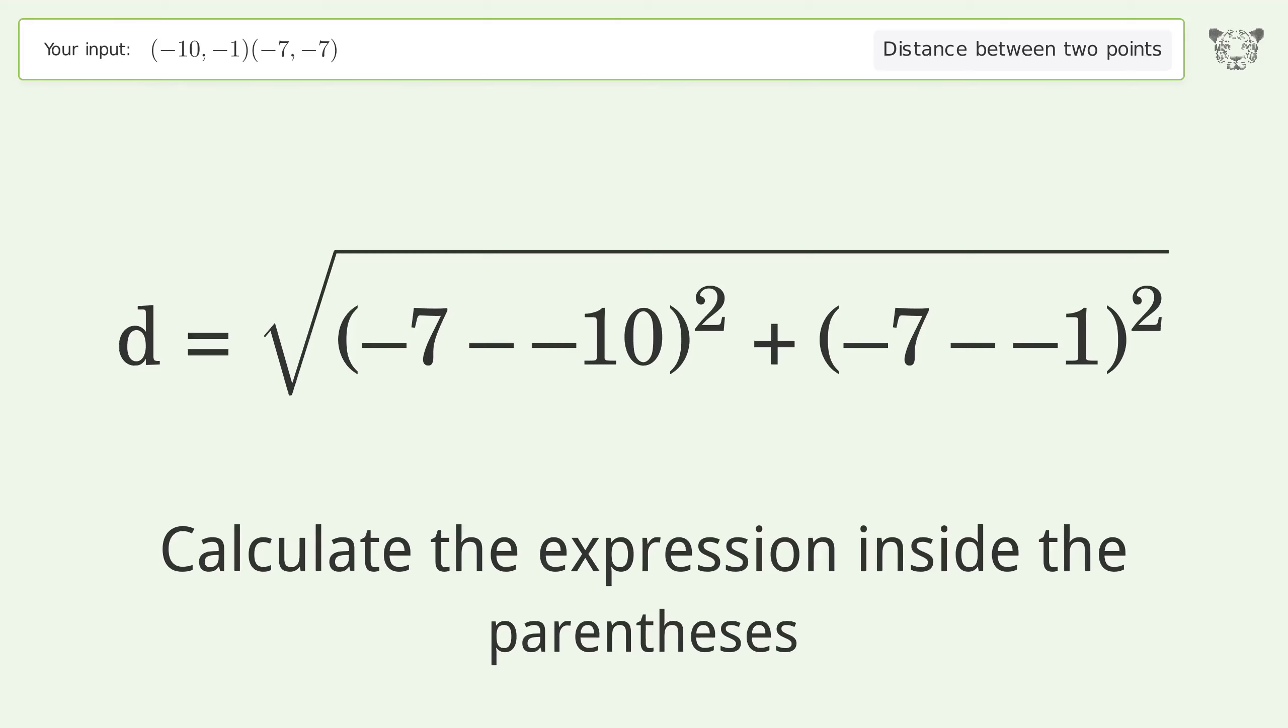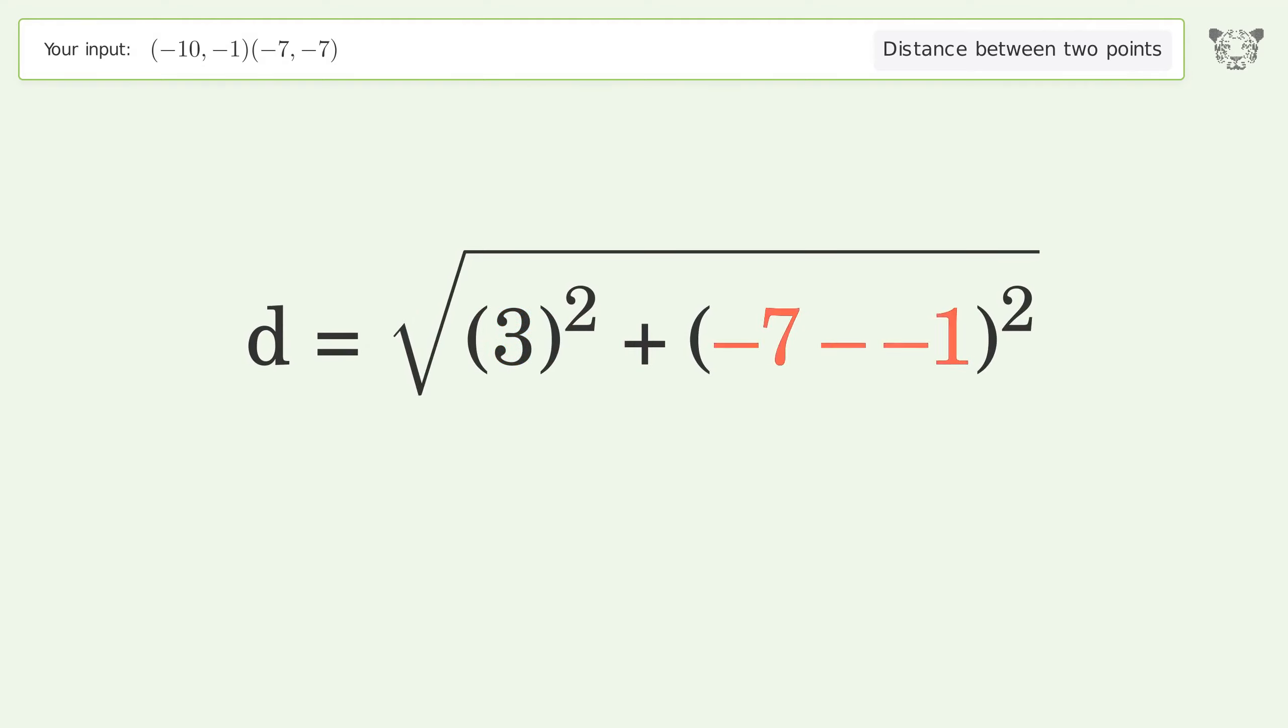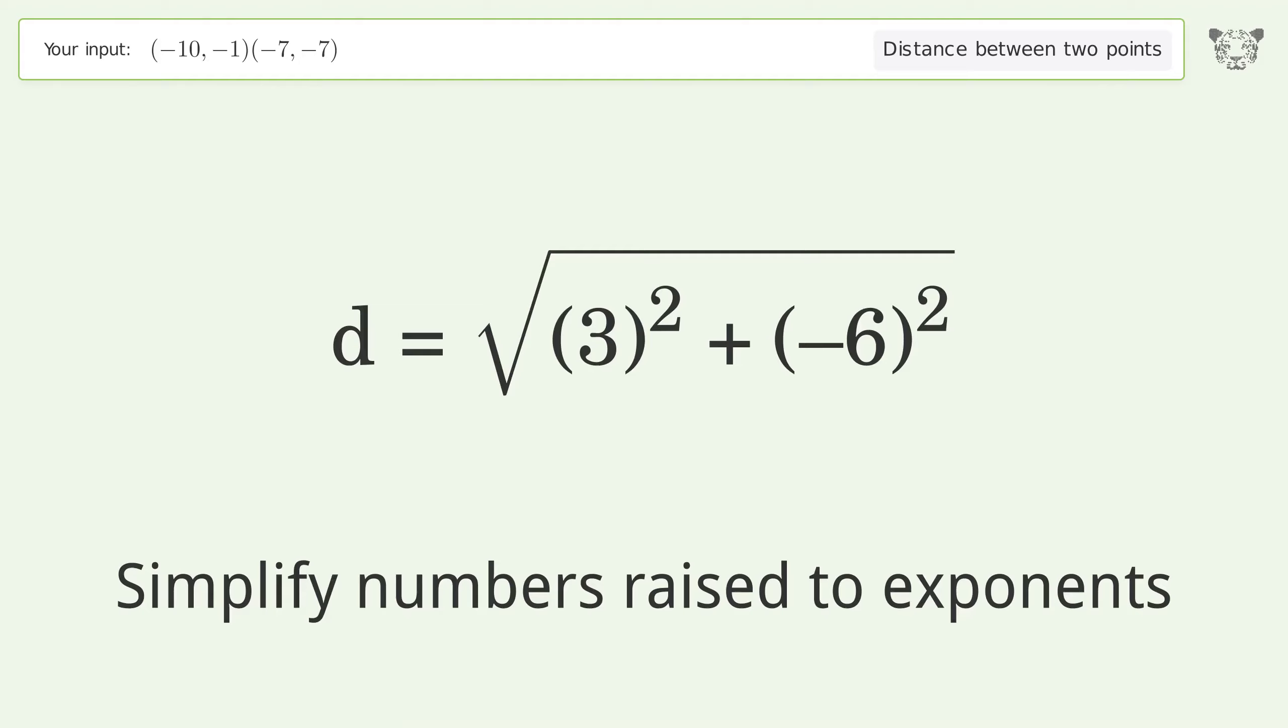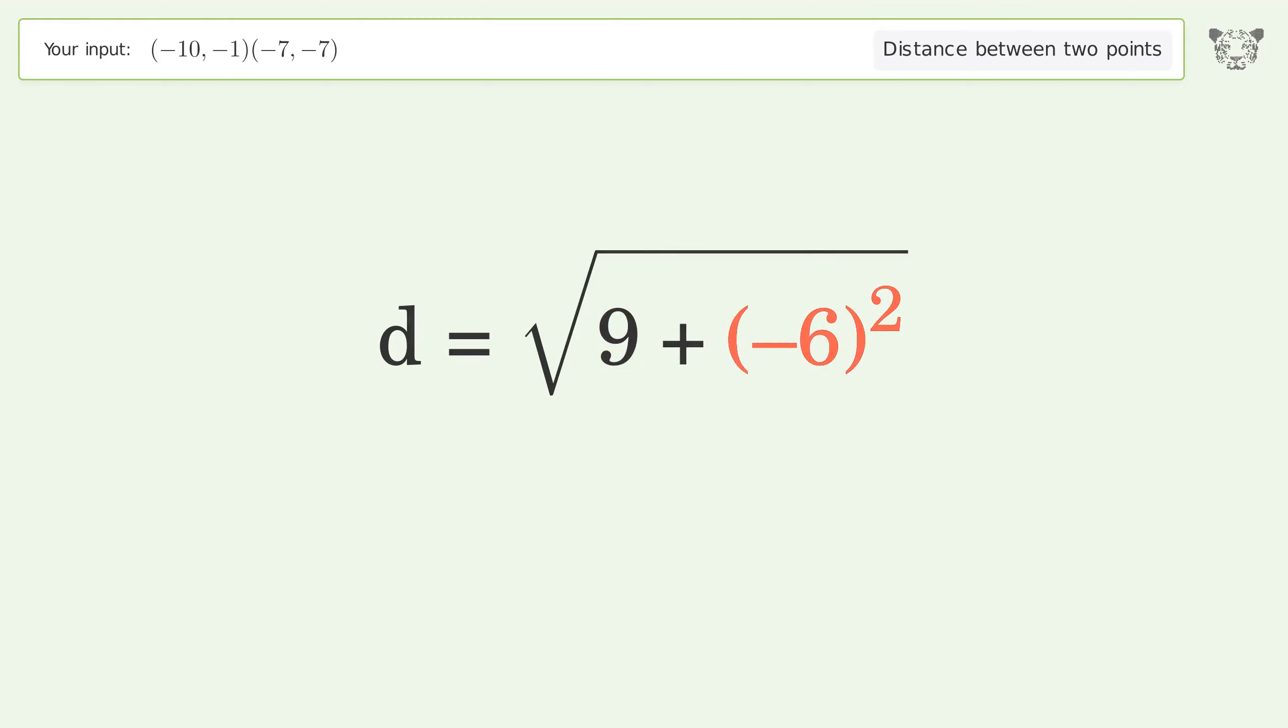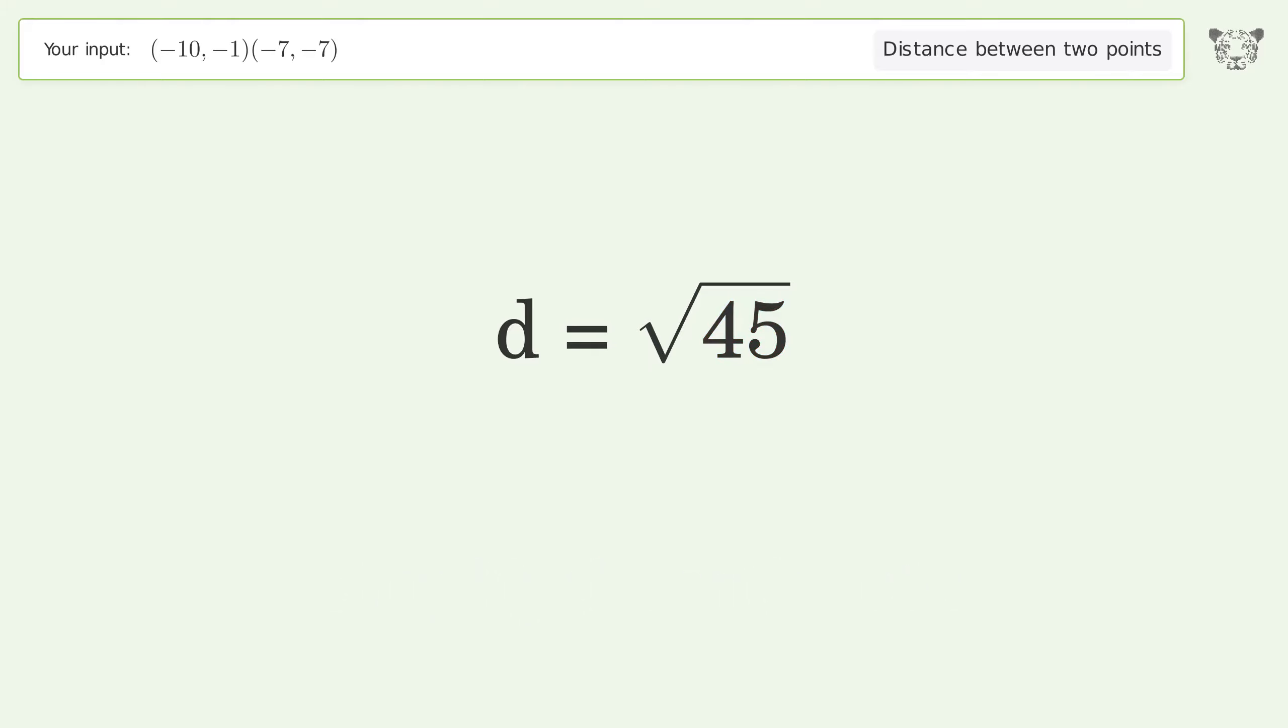Calculate the expression inside the parentheses. Simplify numbers raised to exponents. Simplify the arithmetic. And so the distance between the two points is the square root of 45 or 6.708.